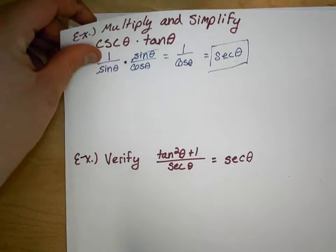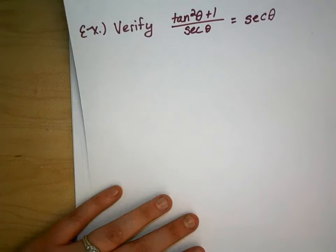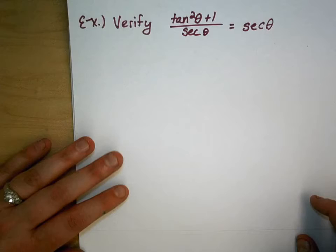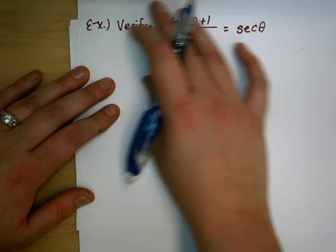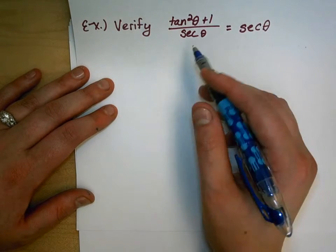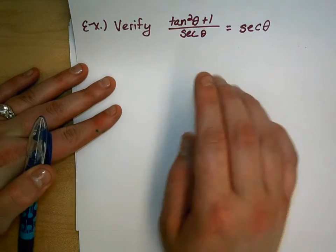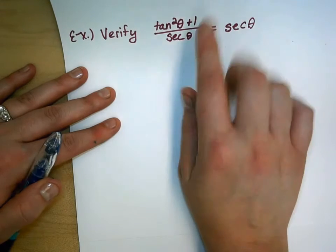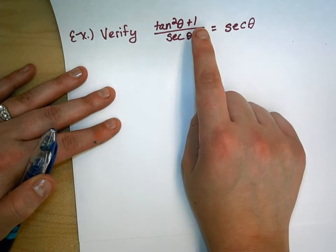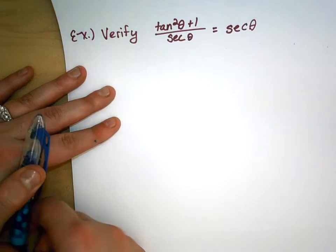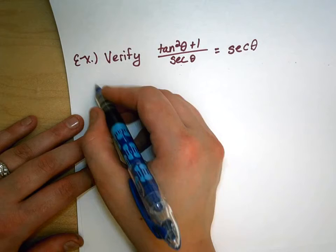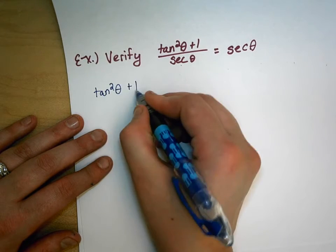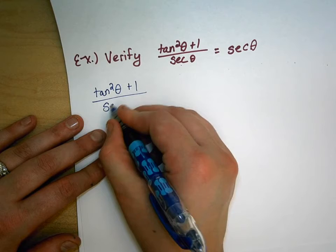Now let's verify this identity — finally getting into some verifying. Remember what I said: you're not going to work both sides. What we're going to do is cover up the easier side and work with the harder side, then start performing operations. So let's work with this guy — I'm going to rewrite it as tan squared theta plus 1 over secant theta.